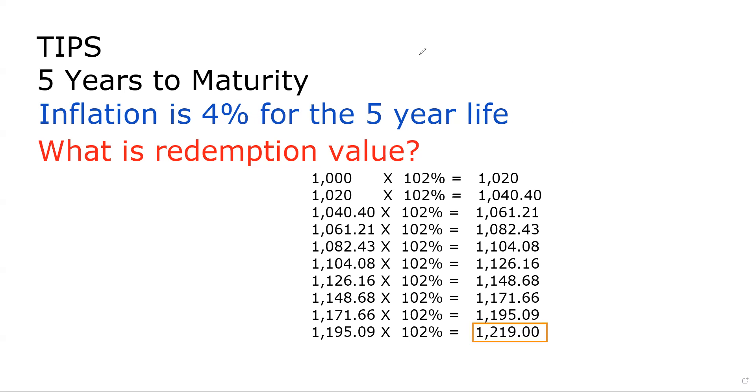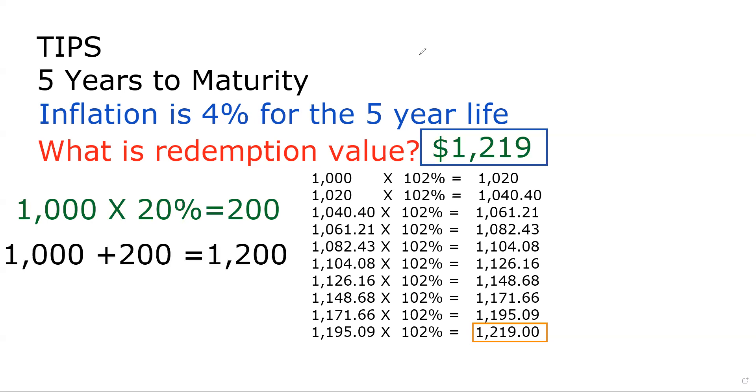Now, again, as I said, you don't have to do that math because what you could have done, and this is what I suggest you do, and that's what they're thinking you should do, is look at this and say, okay, well, if inflation over the life has been 20%, that's $200. So that means that the adjustment is somewhere north of $1,200 because of the compounding. So I need to look at my answer set, and there will only be one answer that is over $1,200.